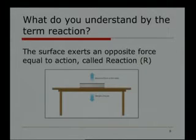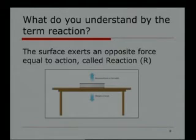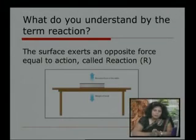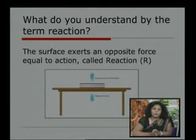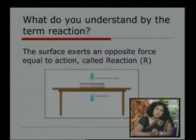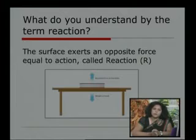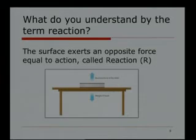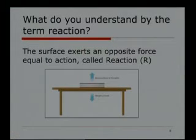A very simple example is a block resting on a table. When a block is resting on a table, it has some self weight and that self weight will be pointed towards the center of gravity, that is in the vertical downward direction. Due to this vertical downward self weight, the block should move in the downward direction, but it is not falling because the support or the surface of the table is giving a reaction in the direction opposite to the motion. So according to Newton's law, for every action there is an equal and opposite reaction. Due to this self weight in the downward direction, there is a force in the vertical upward direction of equal amount, and that particular force is called a reaction force.